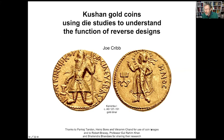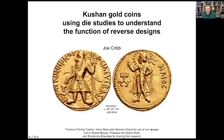This is work I'm doing with Robert Bracey. If you want to see how a die study is done, his article on academia on the die study of Vima Kadphises's gold coins is a model of good practice. I'd also like to mention Gul Rahim Khan in Peshawar who's been helping with our work and has republished all the Kushan coins found at Taxila that survived in the Taxila Museum. I'd also like to thank Pankaj, Heinz Bonds, and Vic Chand for letting me use coins from their collections, and thanks to Pankaj for inviting me to talk.